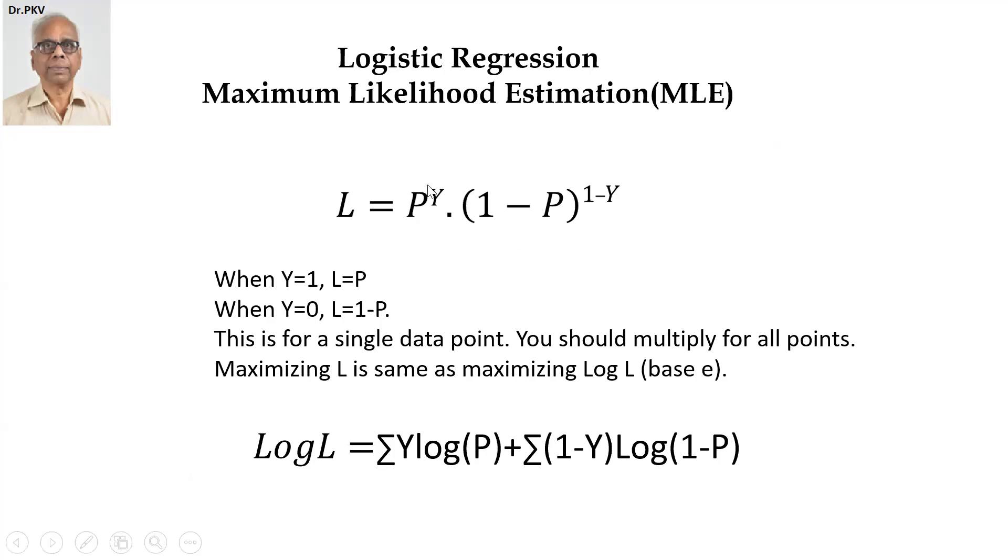L is the likelihood function. The word likelihood in logistic regression is very important. It represents the probability. It's the joint probability between P to the power Y and 1 minus P to the power 1 minus Y.